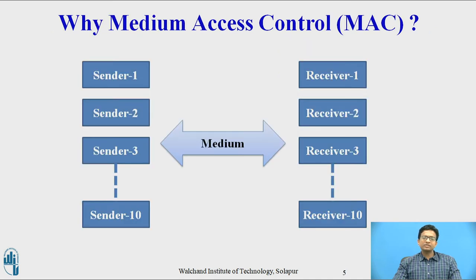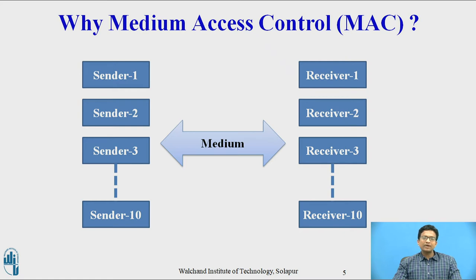Why medium access control? Consider the scenario in the figure where there are 10 senders and all of them want to access the medium at the same time. There might be a collision, so to avoid this collision, we require medium access control. MAC provides each sender a chance to access the medium one after another, so that collision can be avoided, using several medium access schemes.